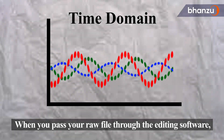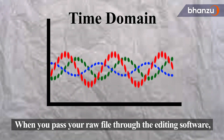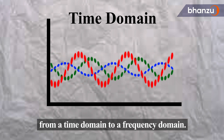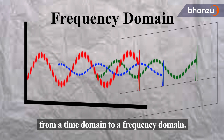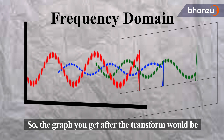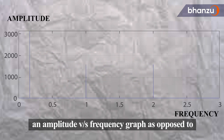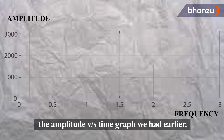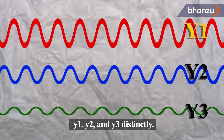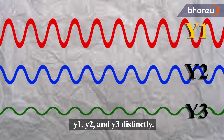When you pass your raw file through the editing software, it employs FFT to convert your signal from a time domain to a frequency domain. So the graph you get after the transform would be an amplitude versus frequency graph, as opposed to the amplitude versus time graph we had earlier. Once that happens, the software can easily identify Y1, Y2, and Y3 distinctly.